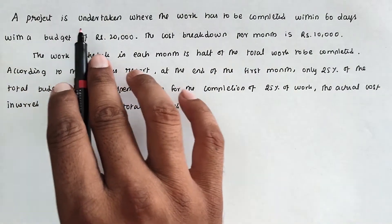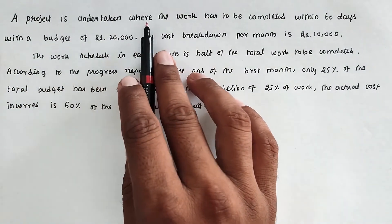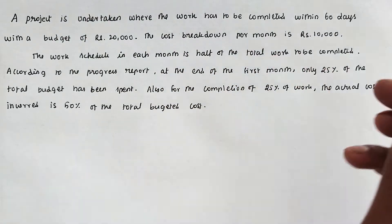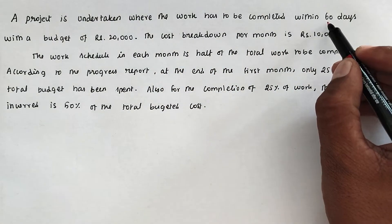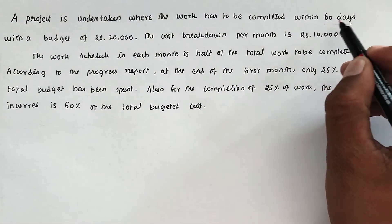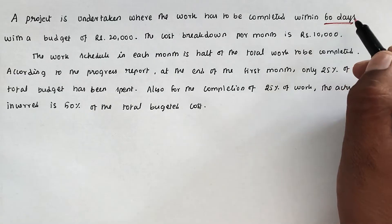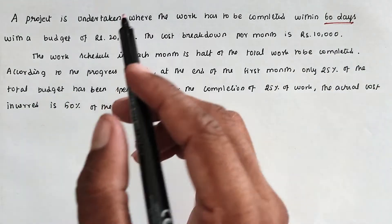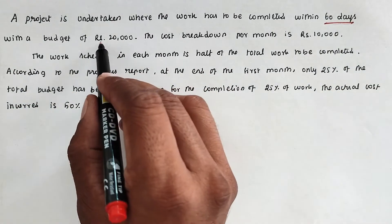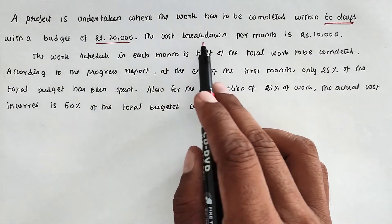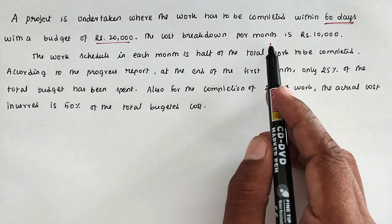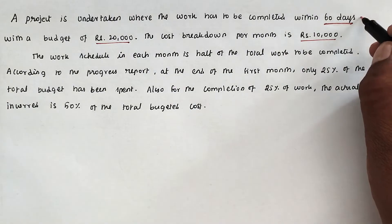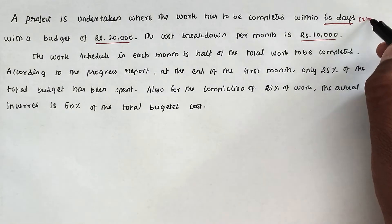The problem is: a project is undertaken where the work has to be completed within 60 days. The duration of the project is 60 days, with a budget of 20,000. The cost breakdown per month is 10,000, so it will be completed in two months.